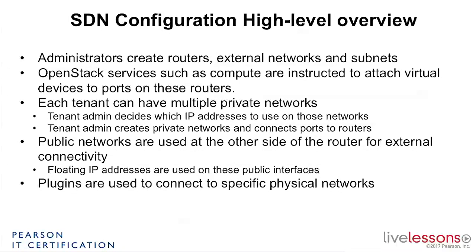On the public network, floating IP addresses are used. The floating IP address is like a source NAT technology that exposes an instance with a publicly available IP address to the outside world. The floating IP address is available on the router — it's like NAT, where the external IP addresses on the router are redirected to the internal IP addresses used on the private networks.